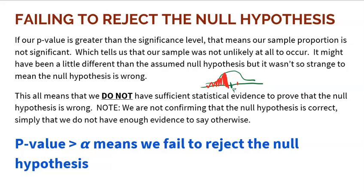For a real-world example: OJ Simpson was let out, but nobody said 'OJ, go free, you're innocent.' The jury came back and said, 'We don't feel there's enough evidence to send you to jail. We're not saying you're innocent — we just don't have enough evidence to say you're guilty.' That's exactly what happens when we fail to reject the null: we're not confirming it, we're just not rejecting it.